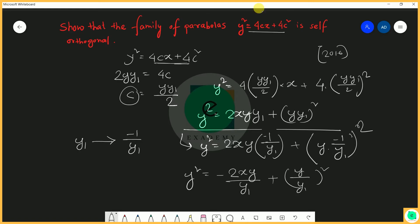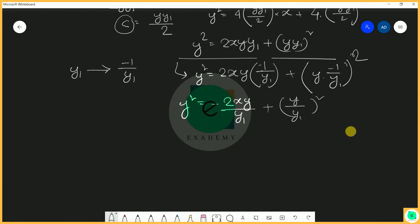Rearranging the terms, we get y₁²·y² = -2xy·y₁ + y². Opening and simplifying, the equation becomes y₁²·y² = -2xy·y₁ + y².